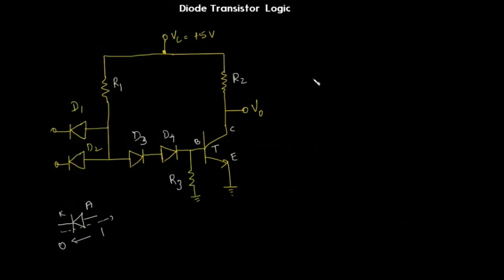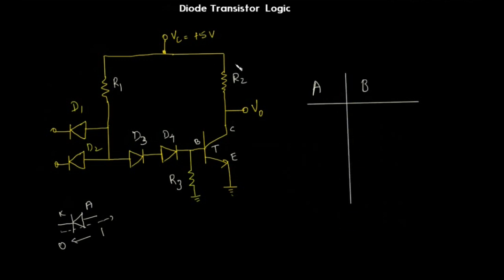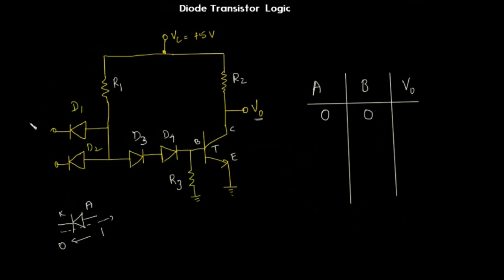We have two input leads for the diode transistor logic circuit — let's name them A and B. The output can be taken from V₀, which is located just above the collector of the transistor. Since we have two variables, we can have the input combinations: 0,0 — this is input A and this is input B.